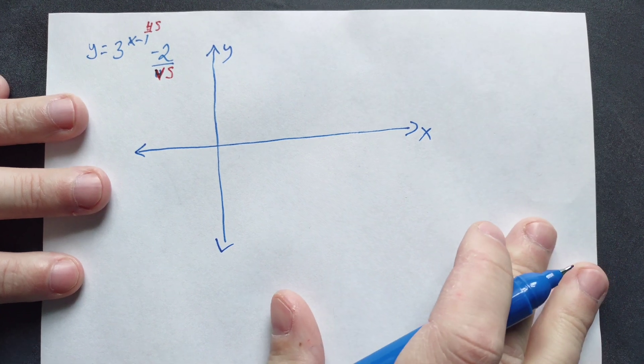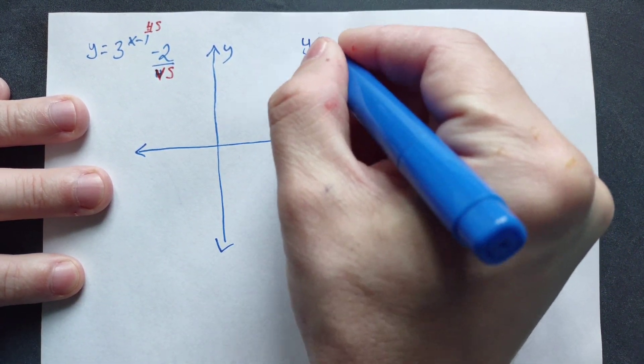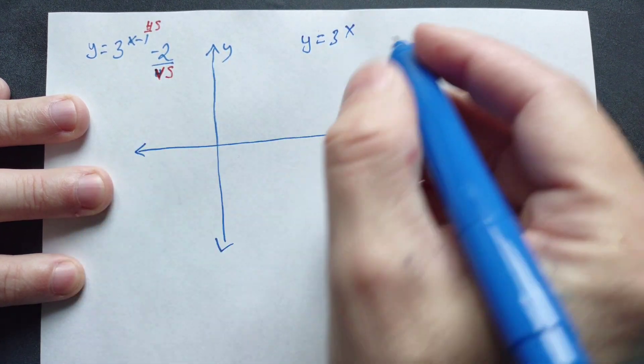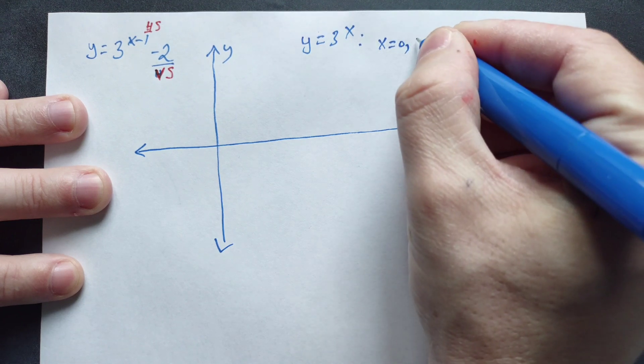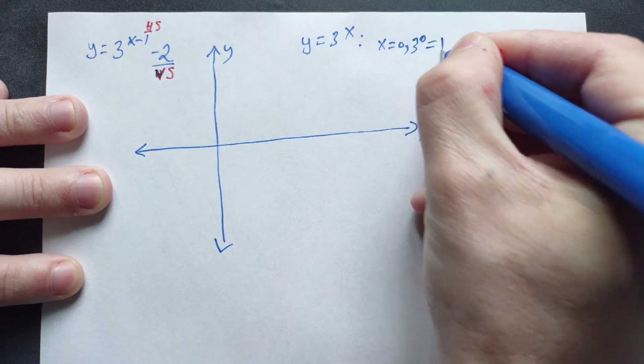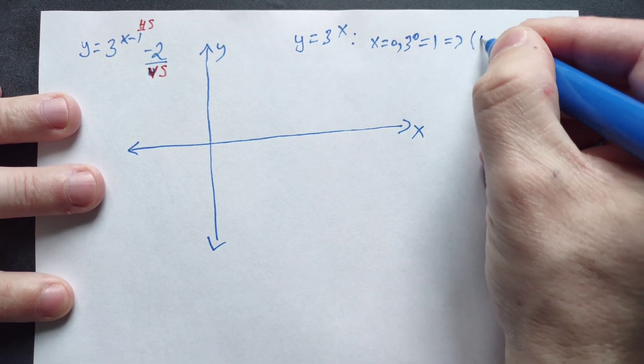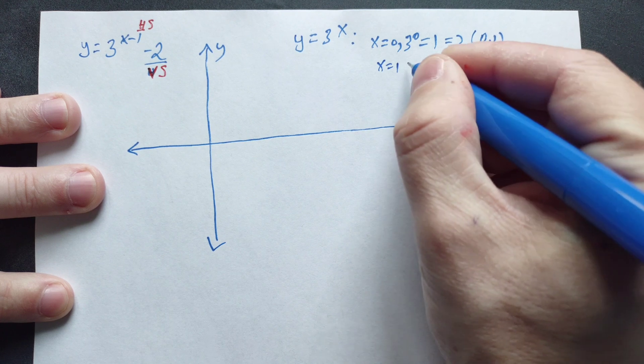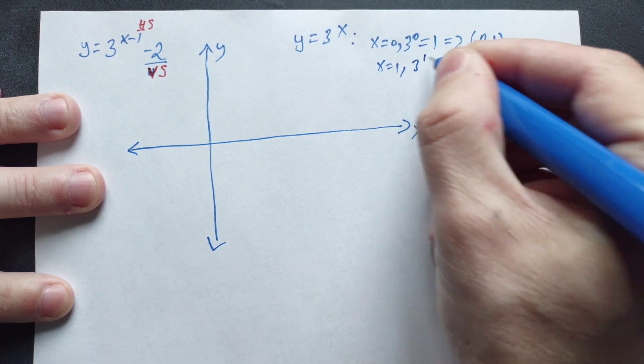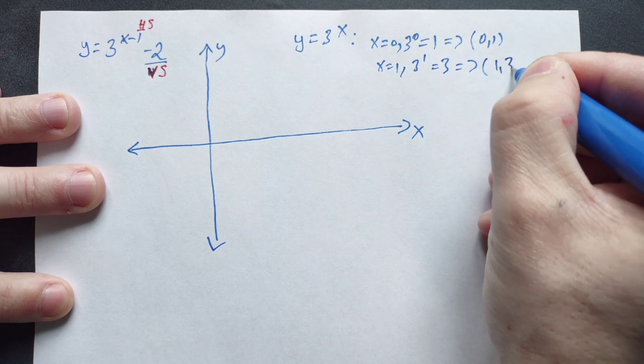Now take a look. In this coordinate system, first just go instead with y equals 3 to the x. That's the parent graph. Look what happens with this graph. When x has the value 0, then we end up with the following: 3 to the 0, which is 1. So in other words, we get the point on the parent graph that looks like 0, 1. When x has the value 1, we get the point on this graph. Then it's 3 to the first, which is 3. So we end up with the point 1, 3.